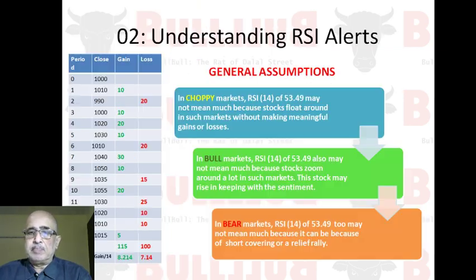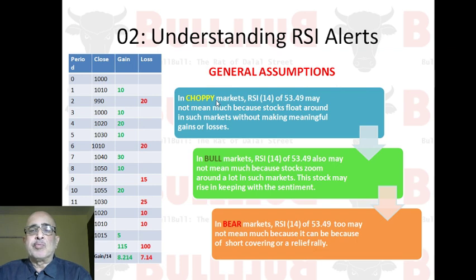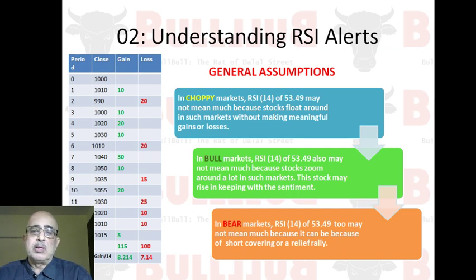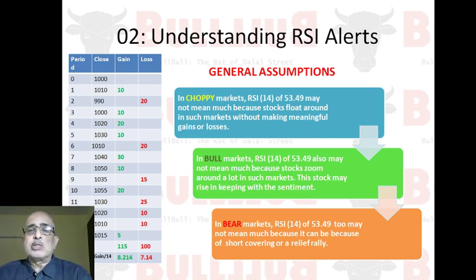The general assumption is that there are three types of market. One is a choppy market where you have a narrow range with around six or seven stocks driving the indices and the rest being in either coma or half to one percent up and down. Then you have a bull market where everything pops, and a bear market where everything falls. We have seen all three recently — in 2017 a massive bull market, a bear market after the budget, and choppy markets throughout.